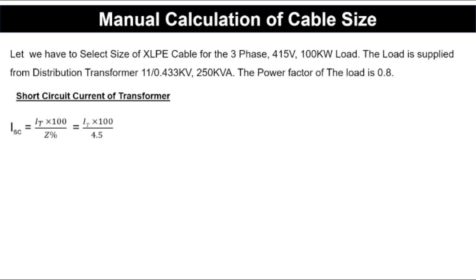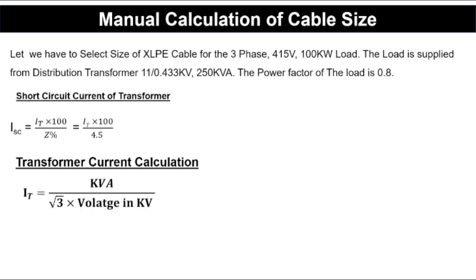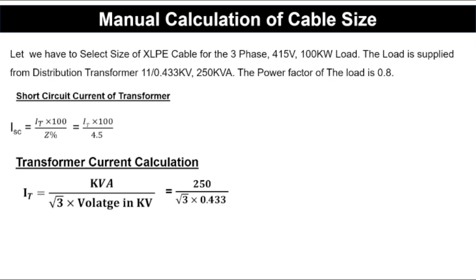To calculate the short circuit current, we first find the transformer's current rating. IT = kVA rating / (√3 × voltage in kV) = 250 / (√3 × 0.433) = 333.34 amperes. Putting this into the short circuit current equation: ISC = 333.34 × 100 / 4.5 = 7407.56 amperes, that is 7.407 kilo-amperes.